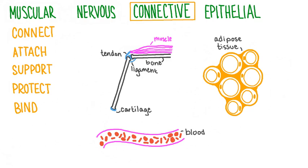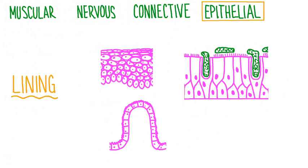Connective tissue gets its name because it's found between other types of tissue nearly everywhere in the body. It functions to connect, attach, support, protect, and bind other structures. Some examples of connective tissue are tendons, which connect muscles to bones, and ligaments, which connect bones to other bones. Bone tissue itself is a type of connective tissue that supports the structure of the body, as well as cartilage, which cushions our joints.